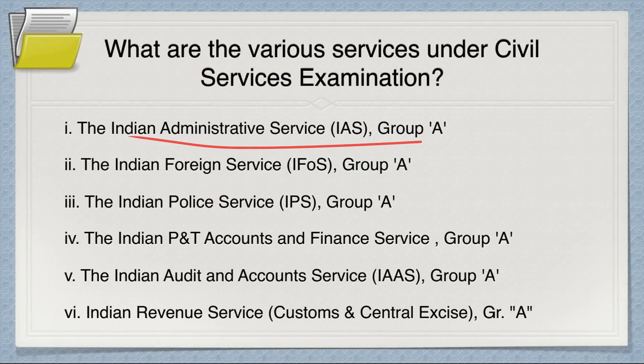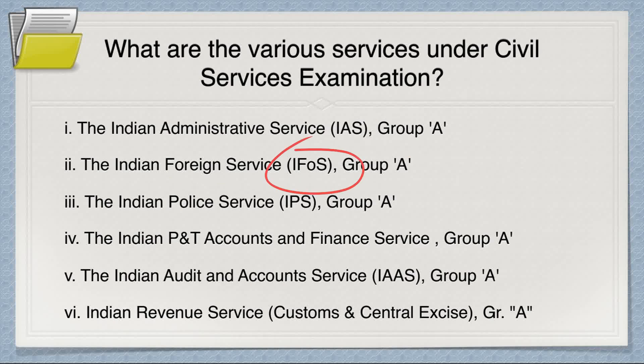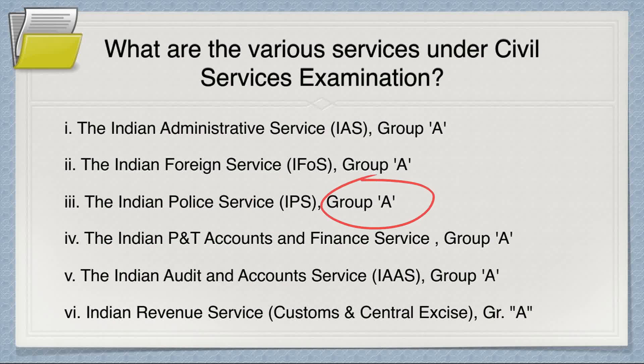What are the services under the civil services examination? The most important service, for which 90% of people appear, is IAS — it is a Group A service. Group A versus Group B is based on grade pay; in a Group B service like DANICS or DANIPS it takes about 15 to 18 years to convert to Group A. Indian Foreign Service (IFS) is a Group A service, and Indian Police Service (IPS) is also a Group A service.